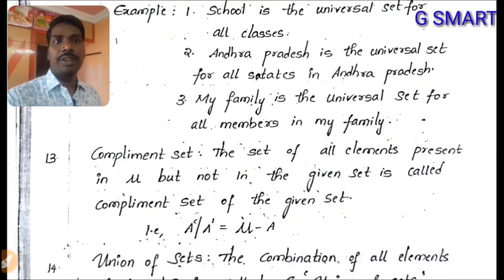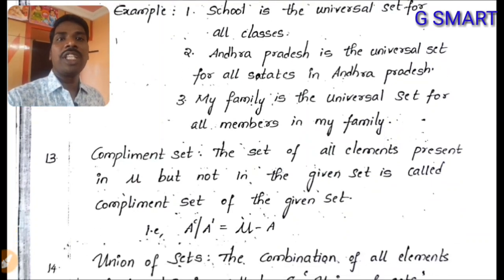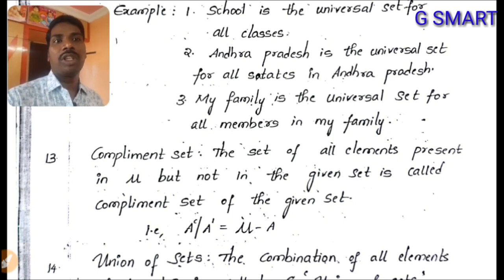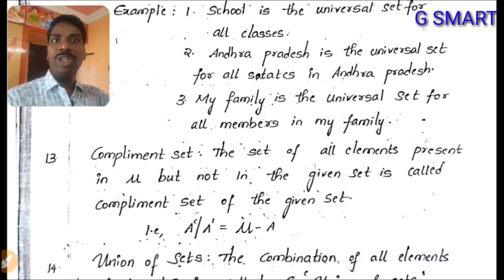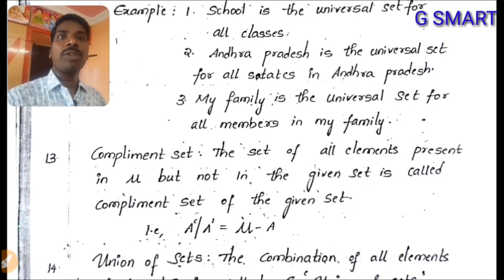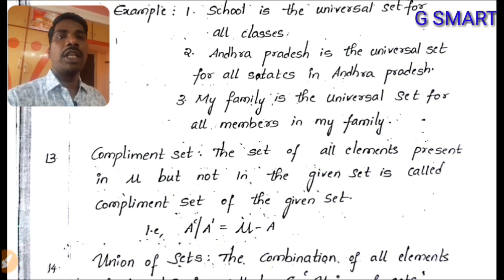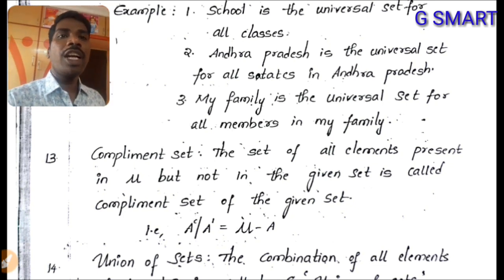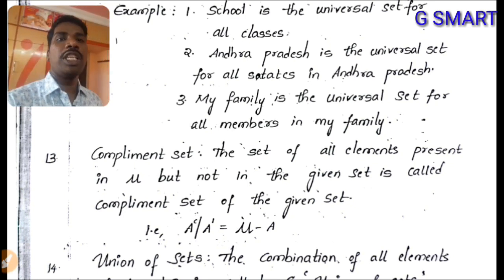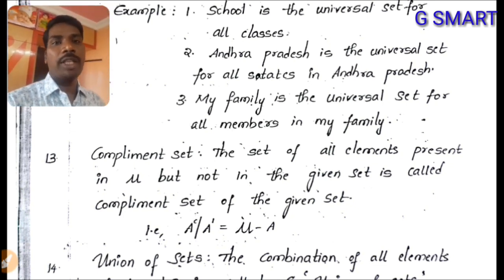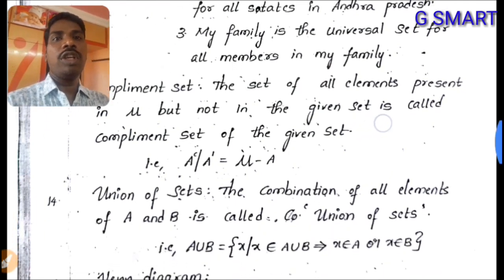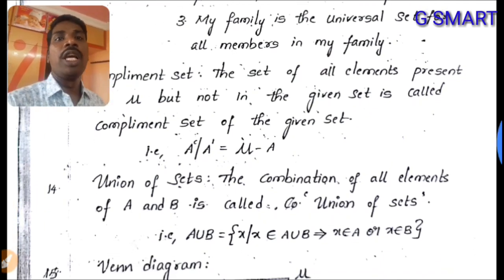Complement set: the set of all elements present in μ (universal set) but not in the given set is called the complement set. It is denoted as A' or A^c, where A' = μ − A.